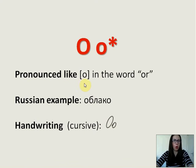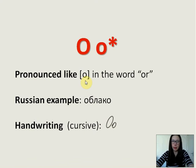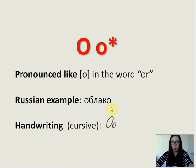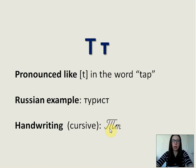О is pronounced like O in the word 'or.' I put a star symbol here — I will explain later, but this letter can make different sounds. Right now, just remember the main sound is О. Russian example: 'облака,' which means cloud. The cursive is quite simple.